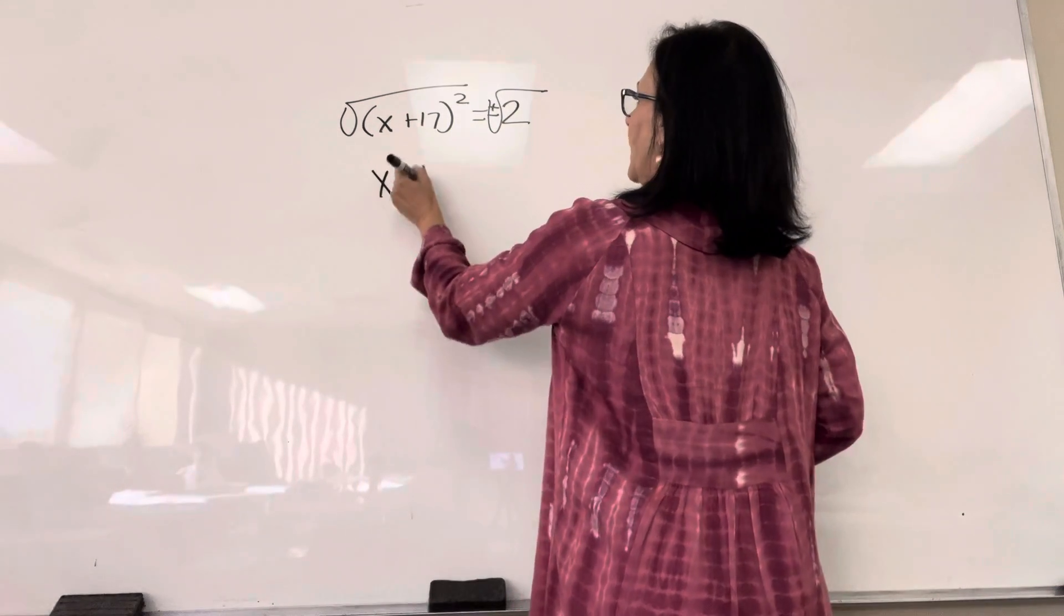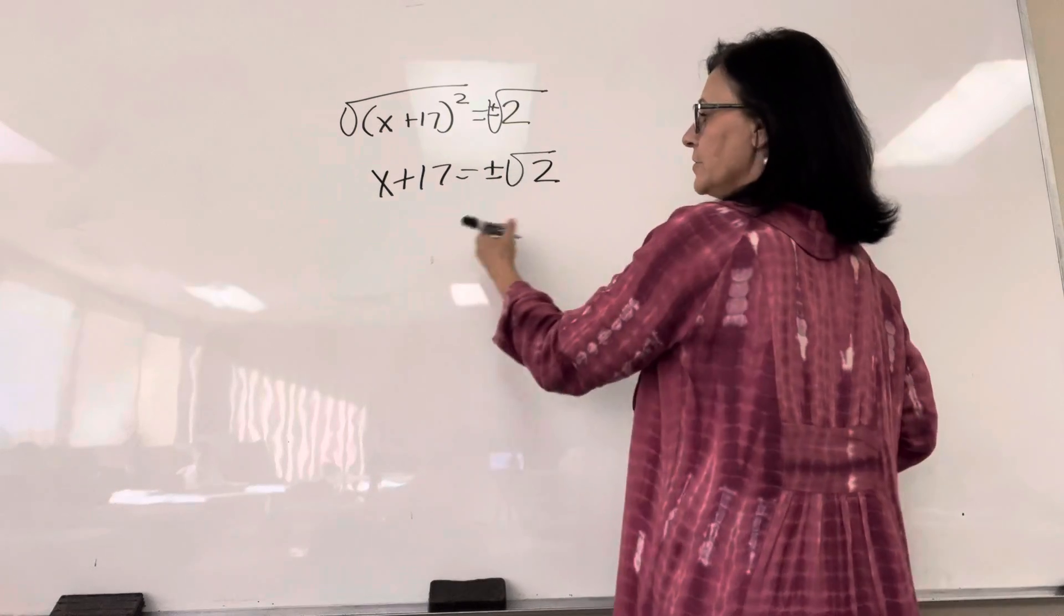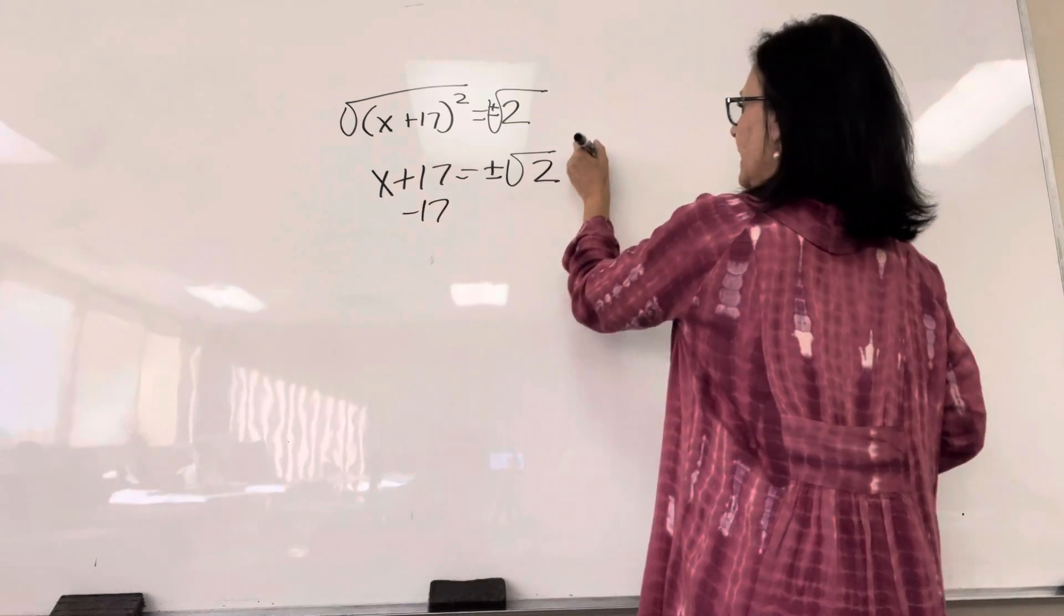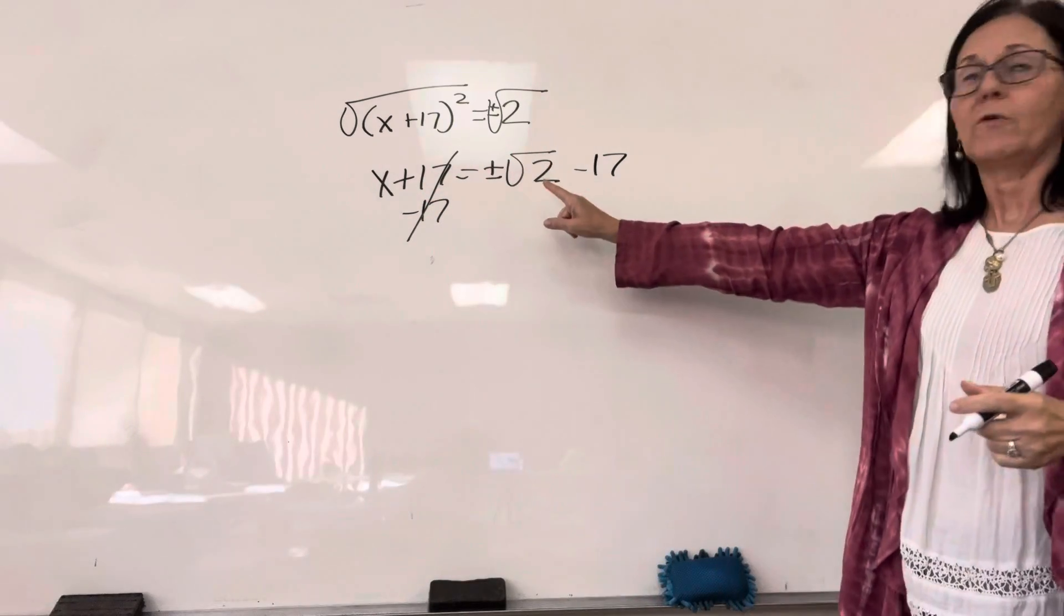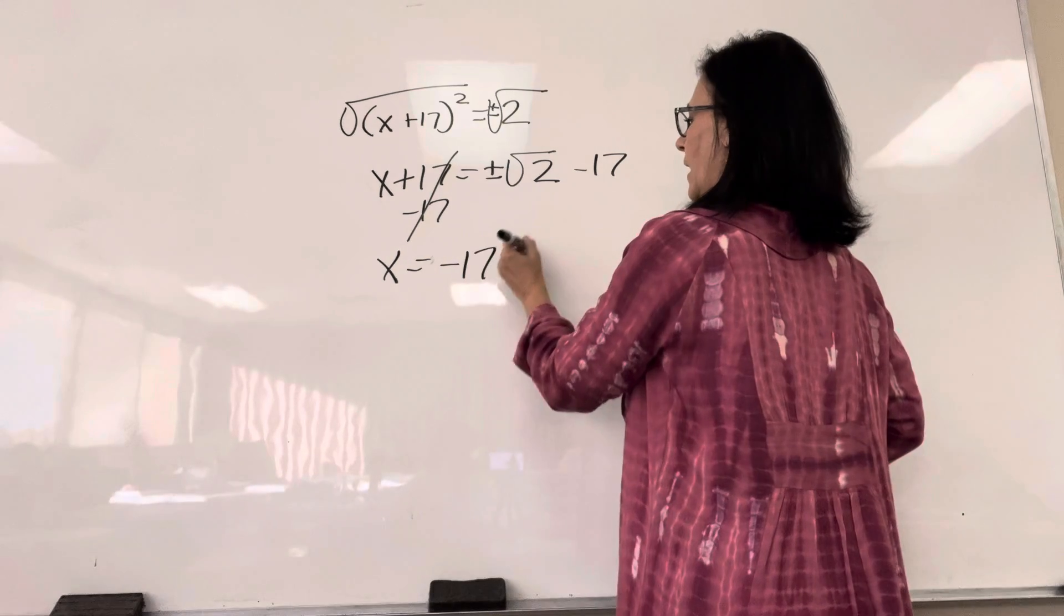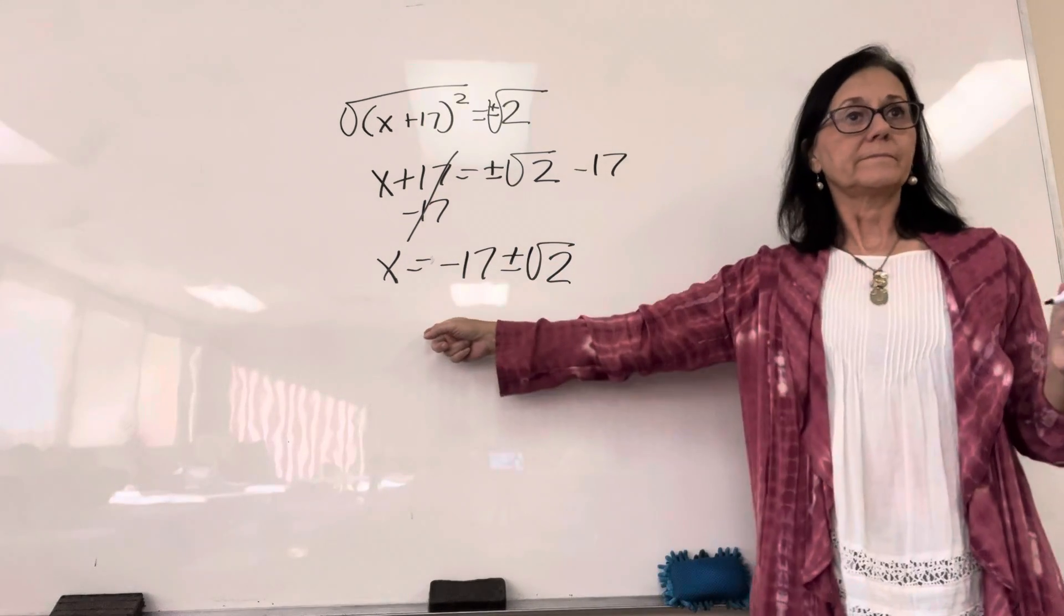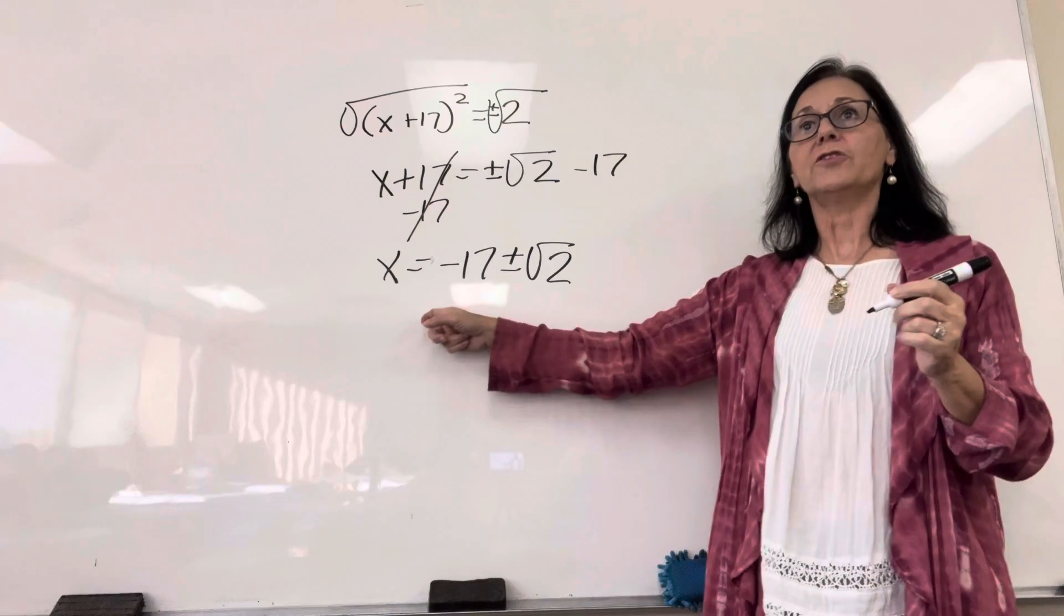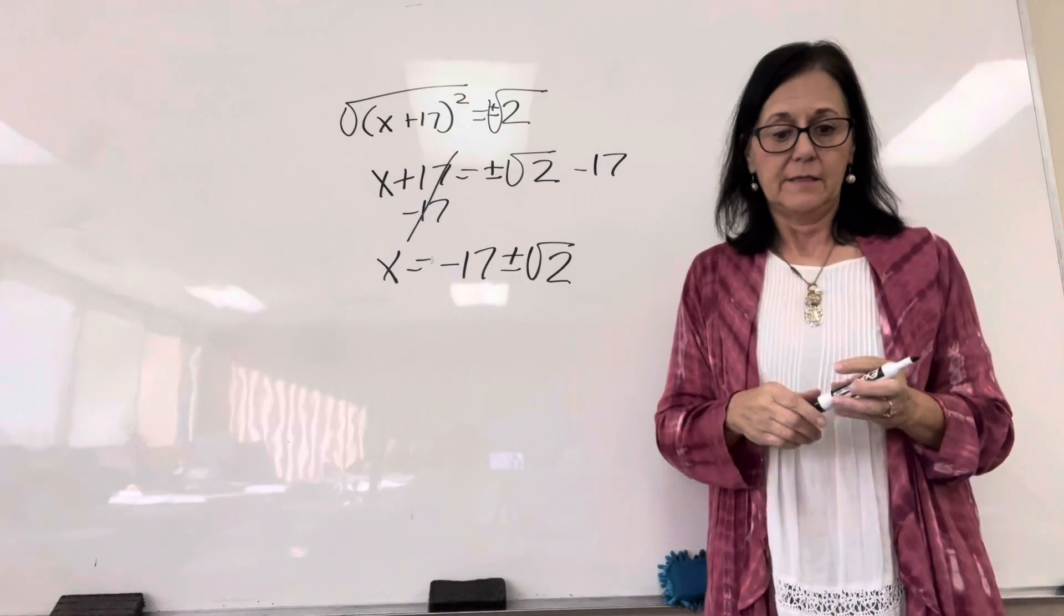So, we're left with x + 17 equals plus minus square root of 2. Then you subtract 17 on both sides. The value of x is, and we must write this in proper order, x equals negative 17 plus minus square root of 2. Remember, it's real, well, it's rational, irrational, and then we're going to add complex later.